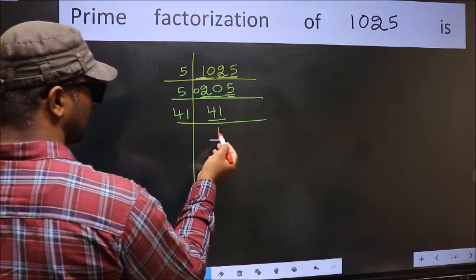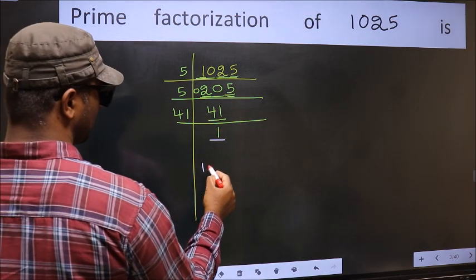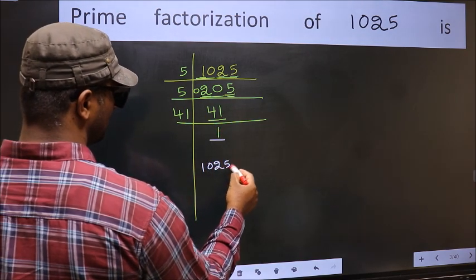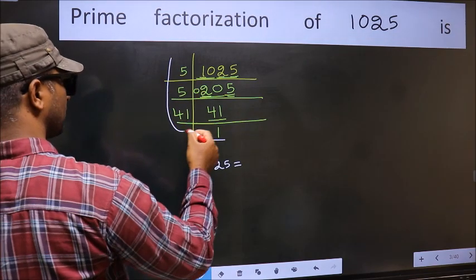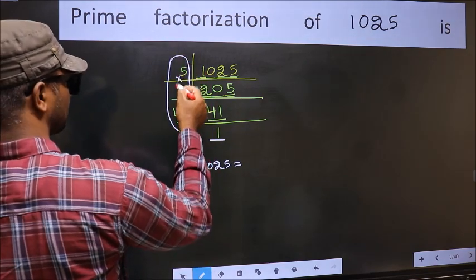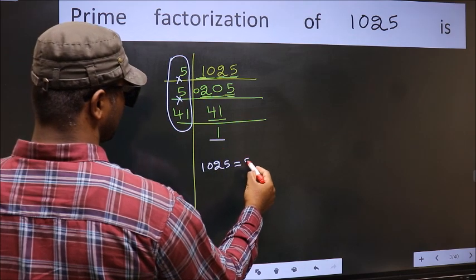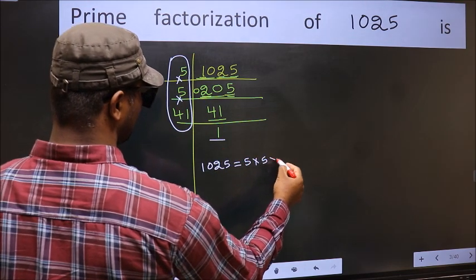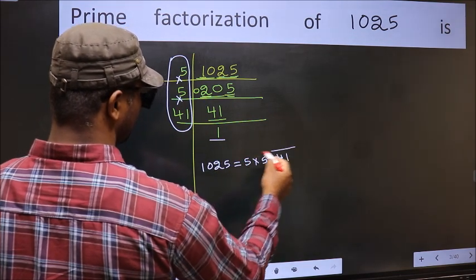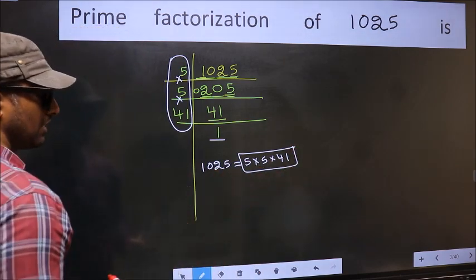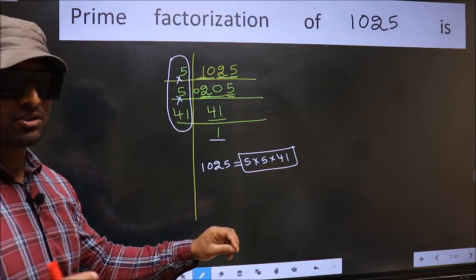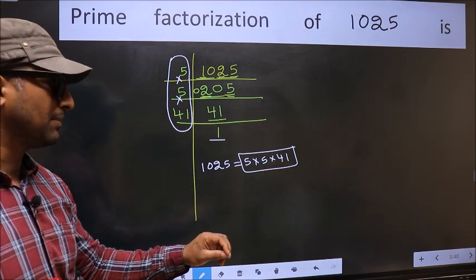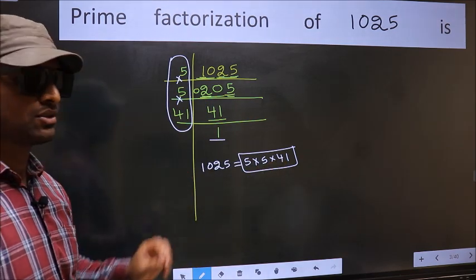So, we got 1 here. So, the prime factorization of 1025 is the product of these numbers. That is 5 into 5 into 5 into 41. This is the prime factorization of 1025. This also called as product of prime numbers of 1025.